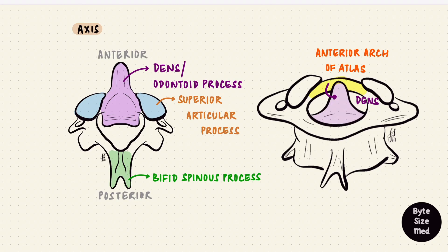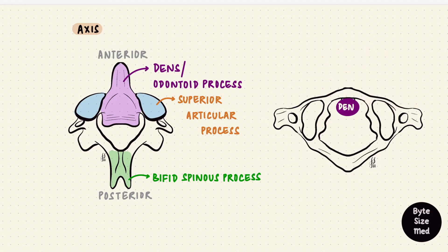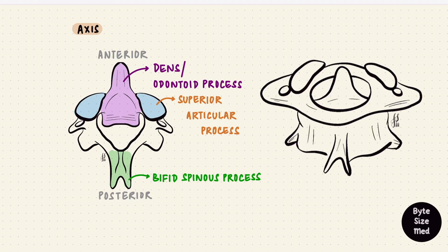Looking from behind, from above we just see the top of the dens. The spinal cord, after exiting the foramen magnum, continues through the vertebral foramen of atlas. The dens together with the spinal cord are thus encircled by that ring-shaped atlas. The lateral masses of atlas have inferior articular processes, which articulate with the superior articular facets of axis. That creates two kinds of joints: one in the middle, between the dens and the anterior arch of atlas, and two on the sides between the articular processes. These are the atlanto-axial joints — one median atlanto-axial joint and two lateral atlanto-axial joints.